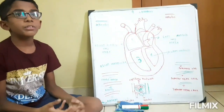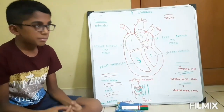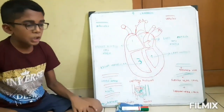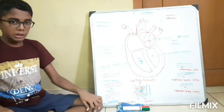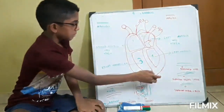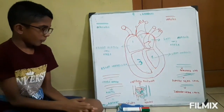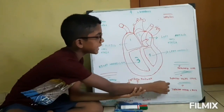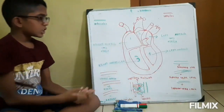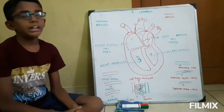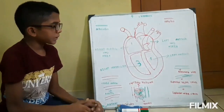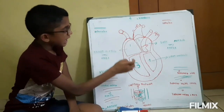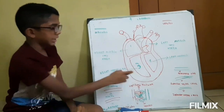Now let's see about veins. Veins' main job is to take the impure blood from the human body to the human heart. The first type of vein's main job is to take the impure blood from the upper portion of the human body and give it to the human heart.